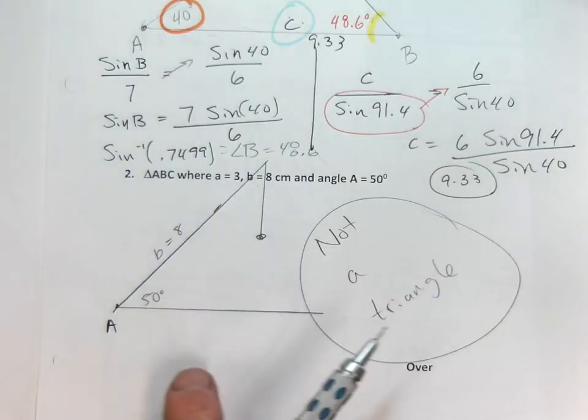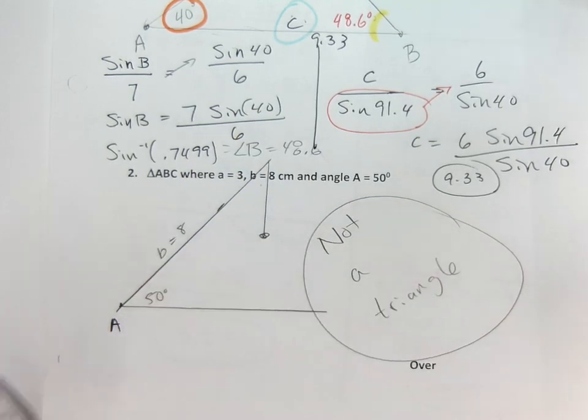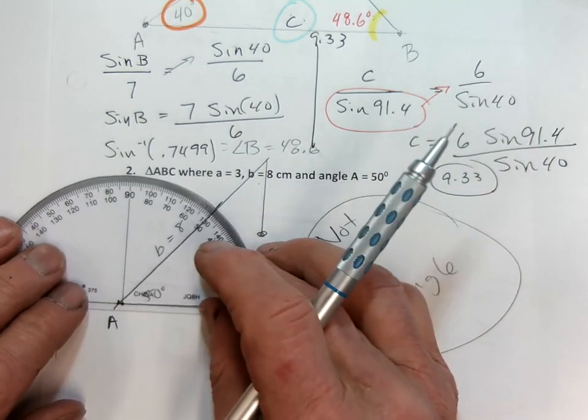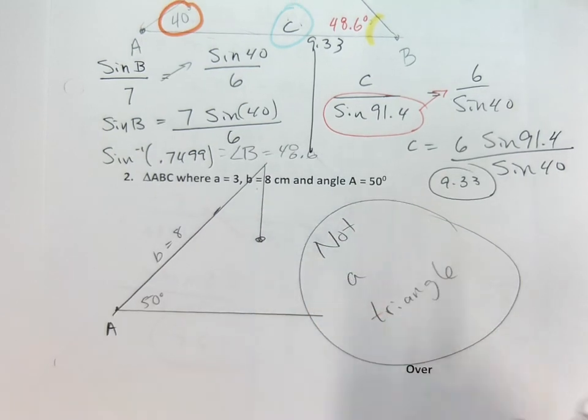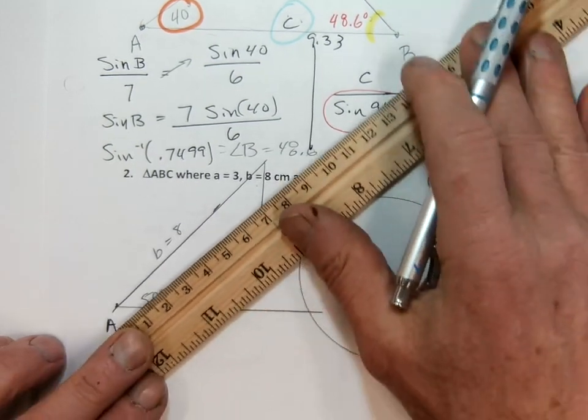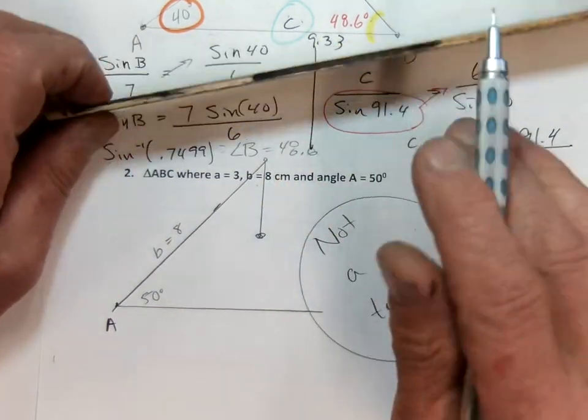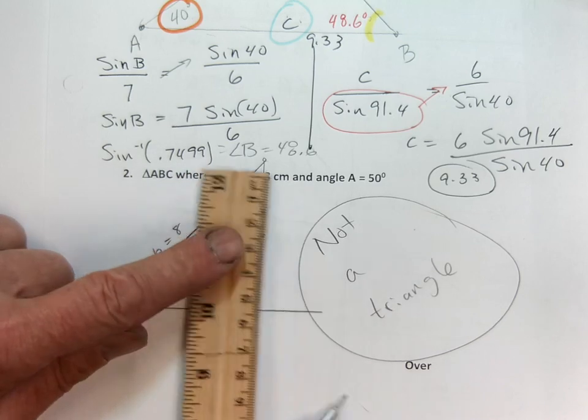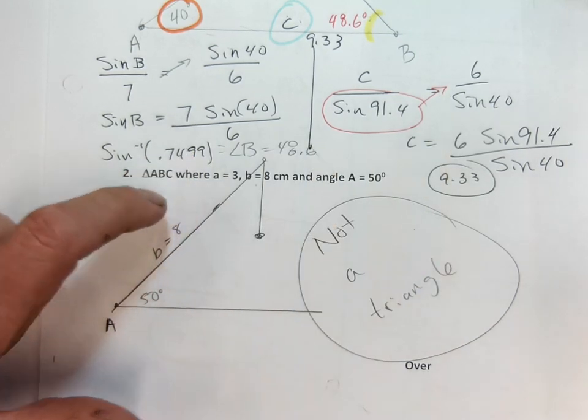So I drew my line here, my angle A, my line. I took my protractor and I drew it 50 degrees. I made side B eight right there. And then if I draw side A of three, it doesn't make it. It's not long enough. This is not a triangle.